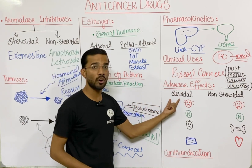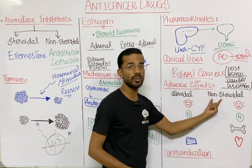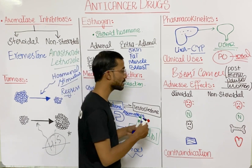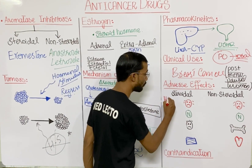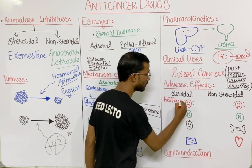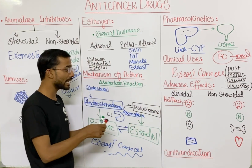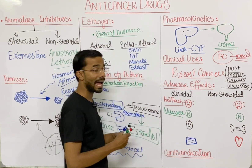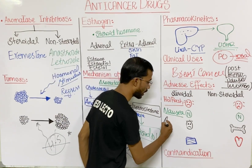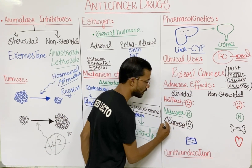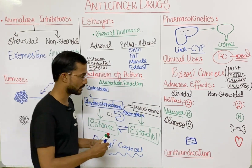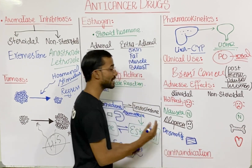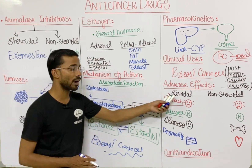Regarding adverse effects of the steroidal drug exemestane: the most important adverse effect is hot flashes, followed by nausea, alopecia (hair loss), and dermatitis.